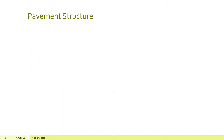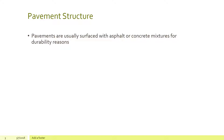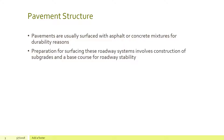The pavement structure is usually a surface with asphalt or concrete mixes for durability reasons over the life cycle of the roadway surface. We also have to deal with the environmental conditions that affect the highway system as it ages over time. Preparation for surfacing these roadways involves construction of subgrades and a base course for roadway stability.